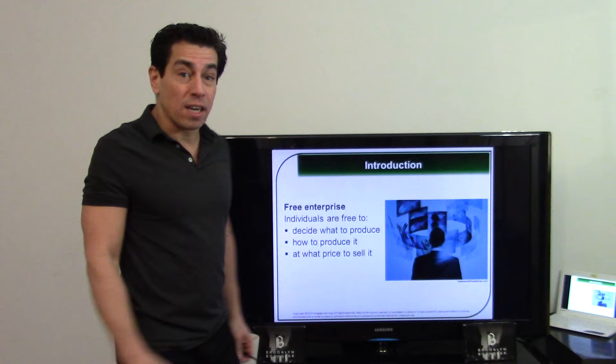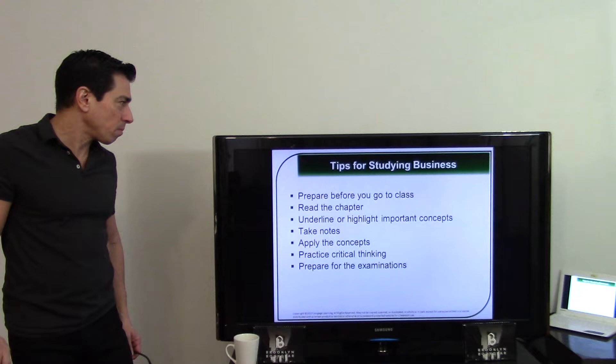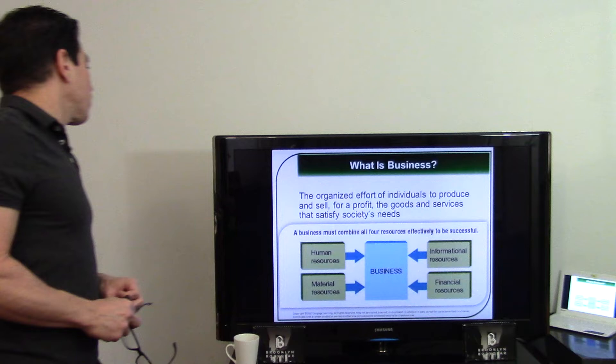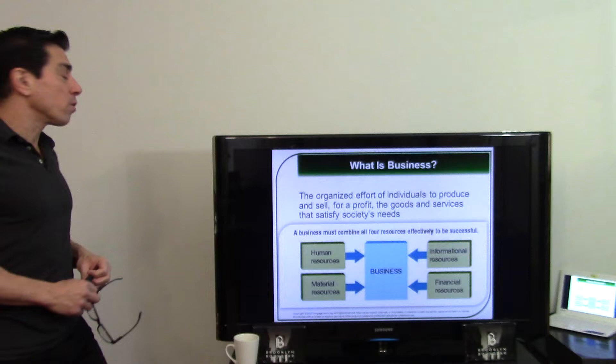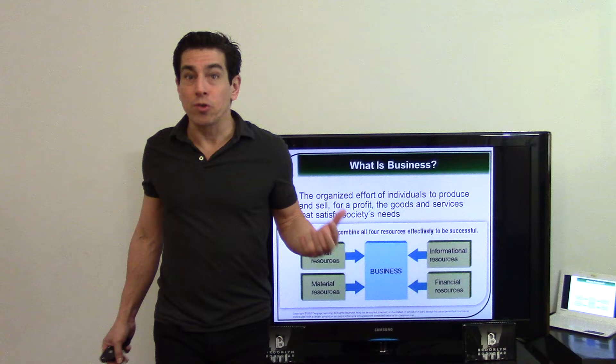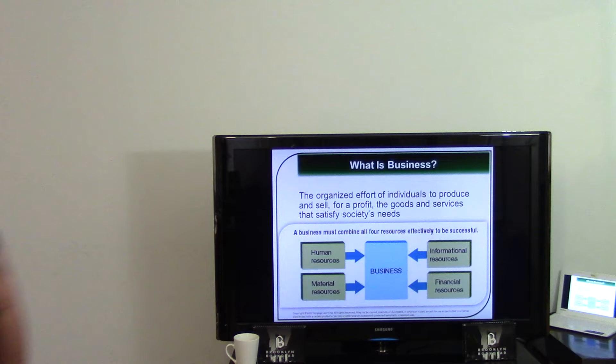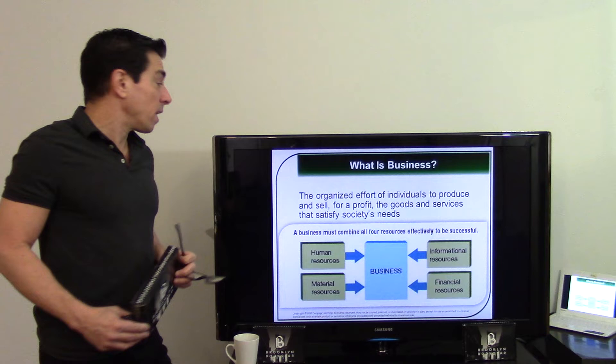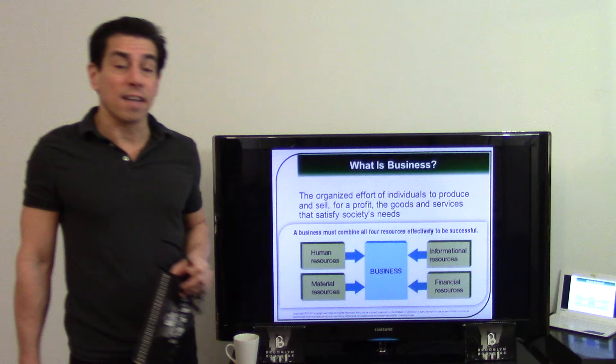That's what free enterprise is. There are four major resources for business: human resources — people; material resources — factories and the products they make; informational resources — IT; and financial resources — money. For Brooklyn BodyGear, human resources are the people that work for the company, material resources are the underwear and factory, informational resources are the technology, and financial resources are the money to create the product.